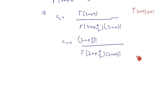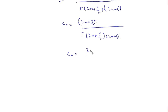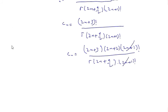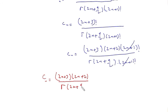We can simplify further: in the numerator, (2n+3)! expands as (2n+3)(2n+2)(2n+1)!, and in the denominator we have gamma(2n plus 9/2) times (2n+1)!. The (2n+1)! factors cancel, so the final value of the constant is c_n equals (2n+3)(2n+2) over gamma(2n plus 9/2), for n = 0, 1, 2, 3, …